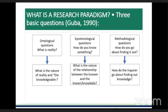Epistemological questions essentially answer: how do you know something? What is the nature of the relationship between the knower and what is known, or what you want to know? Between the researcher and what is being researched? And methodological questions essentially answer the question about how you go about finding out this knowledge — what is it that you do to get to the knowledge that you are looking for?